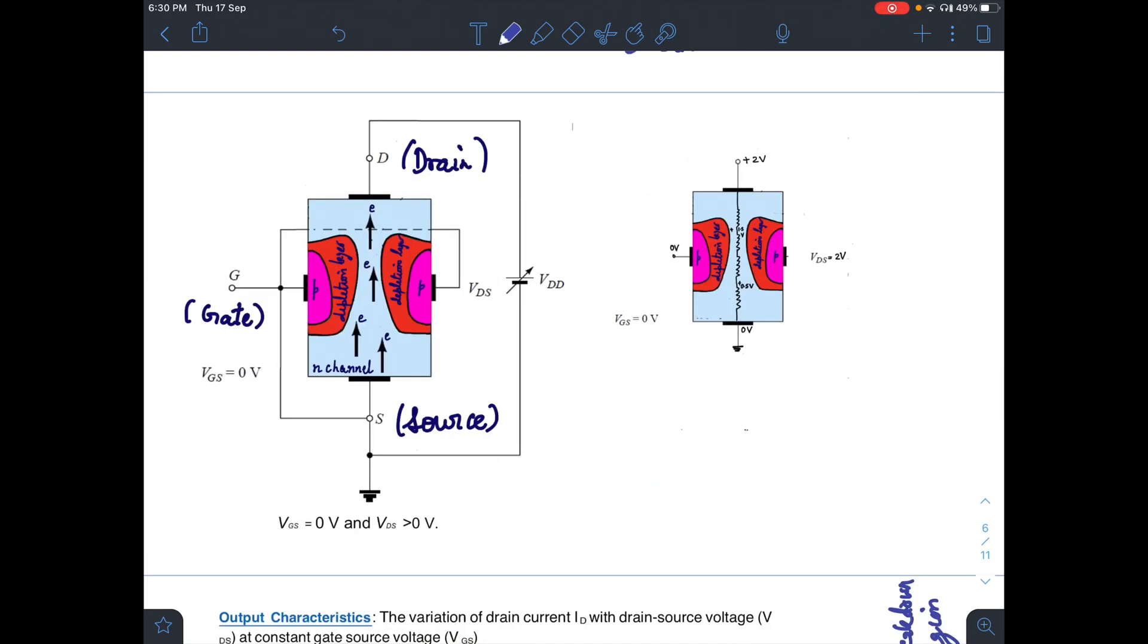What you will do is start with VGS equal to 0V. That is, gate to source will be 0 volt and VDS will be greater than 0 volt. This is n-type semiconductor, this is n-channel, and these are p-type semiconductors with gate connected to source. Therefore, VGS is 0 volt.